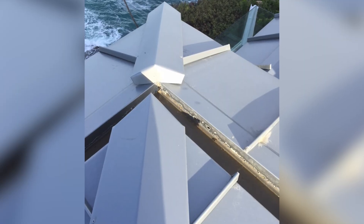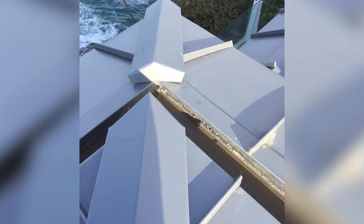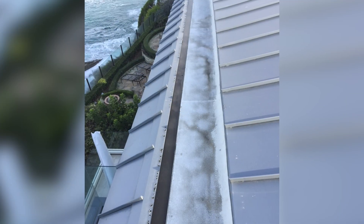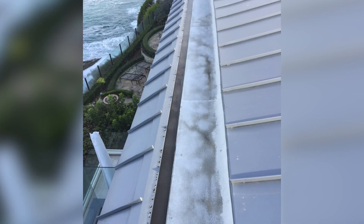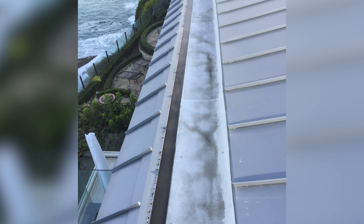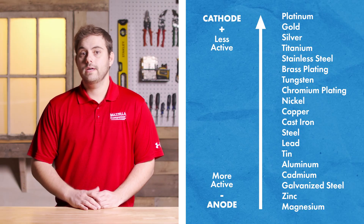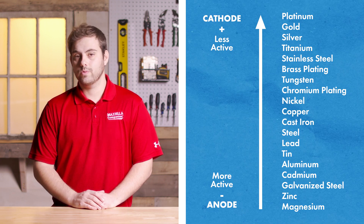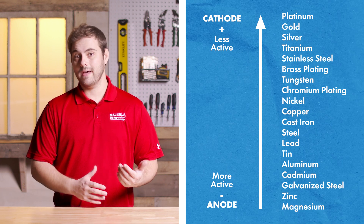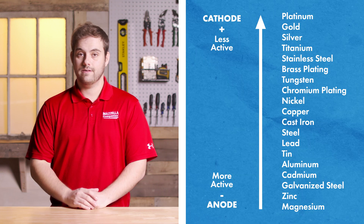Galvanic corrosion occurs when one metal corrodes in preference to a second metal, making electrical contact in the presence of an electrolyte. To fully understand this, we have to look at the chemical makeup of various materials. Different metals and alloys have a range of electrode potentials, which means some metals are more active and some metals are less active.